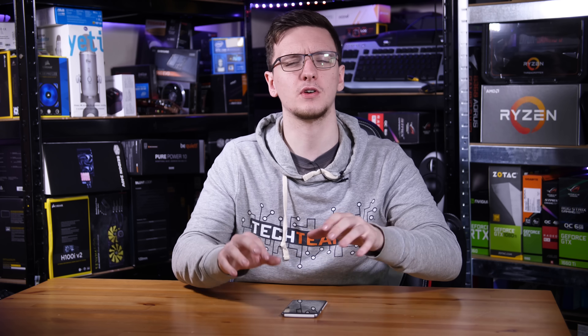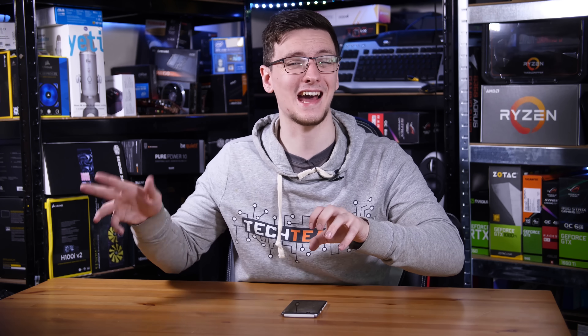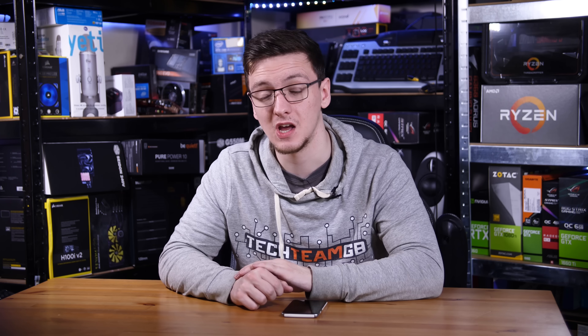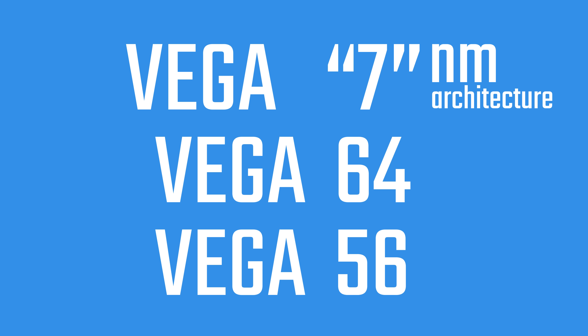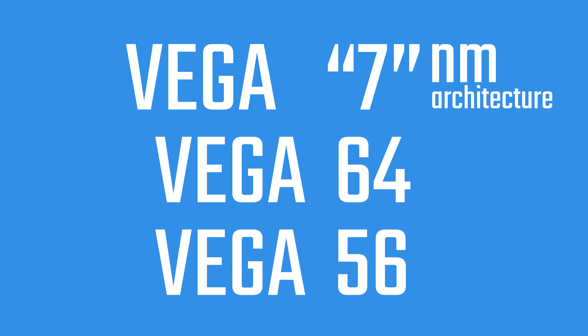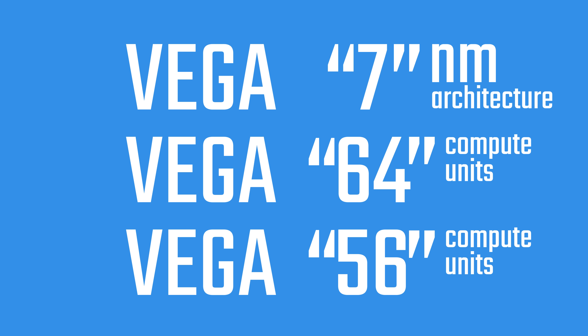The reason for the naming discrepancy is that the Vega 7 was launched significantly after the more original Vega 64 and 56, with the 7 referring to the 7 nanometer architecture, whereas the original Vegas — the 64 and 56 — were named based on how many compute units each had.